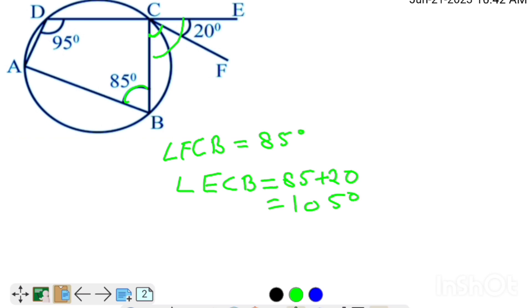We know that by the property that if we have a cyclic quadrilateral and one side is extended like this, then this exterior angle is equal to opposite interior angle.